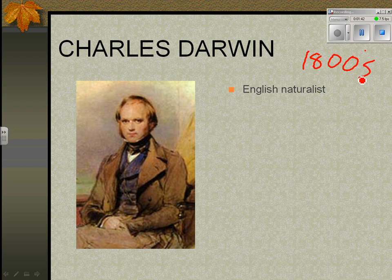A naturalist was a person who would go into the wild and observe organisms in their environment, and either write about them or draw and write about them. If you lived in England in the 1800s, how would you know about kangaroos? Well, somebody went to Australia, saw a kangaroo, drew it, and made a book about organisms of Australia. The printing press had been invented about 300 years before, but things weren't distributed as instantly as they are today.